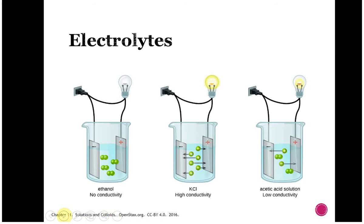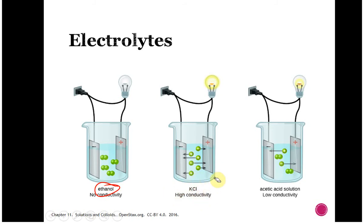In terms of what an electrolyte means in practice: ethanol and other covalent compounds that do not dissociate are not going to break apart. There are no ions present, so these are non-electrolytes — they don't conduct electricity. You can set up electrodes attached to a light bulb: with an ethanol solution, it doesn't conduct electricity. On the other hand, if you take something like potassium chloride, we know this is soluble — it's got potassium and chloride, both of which are soluble.